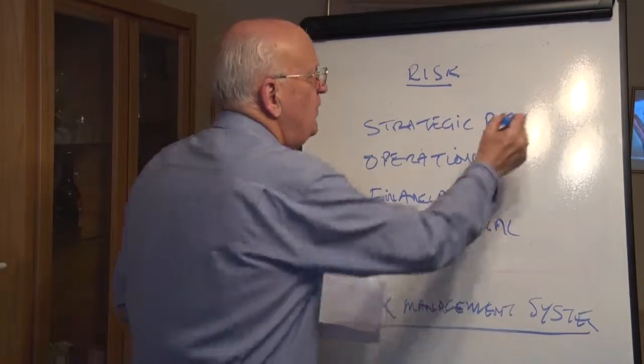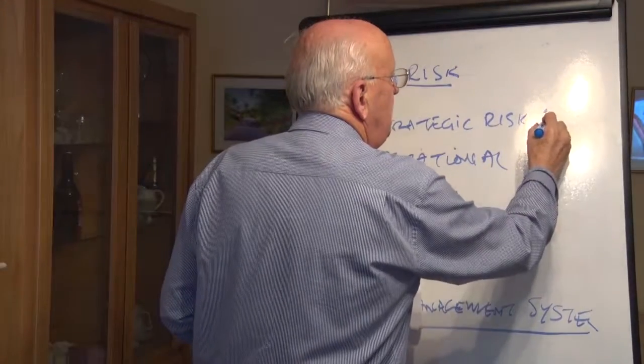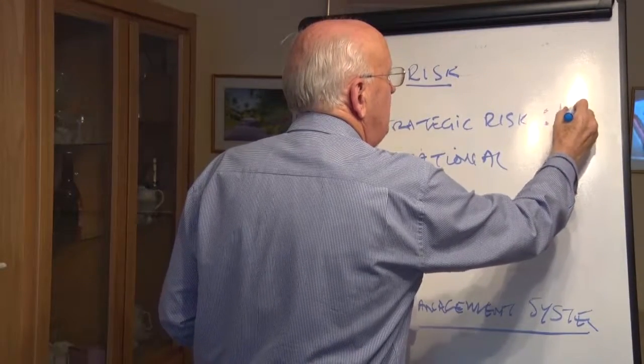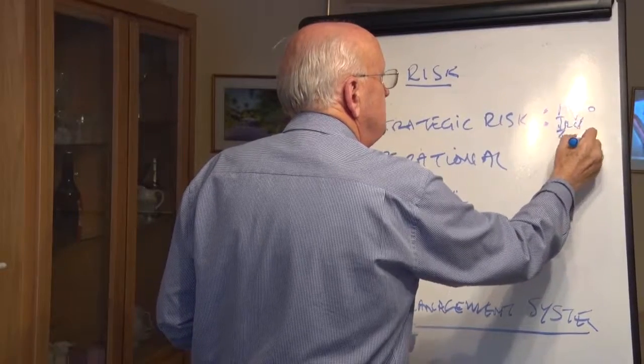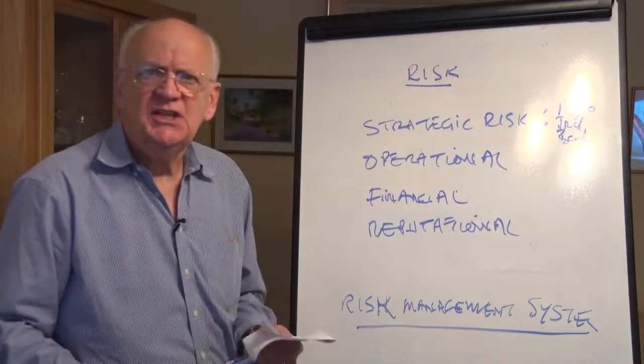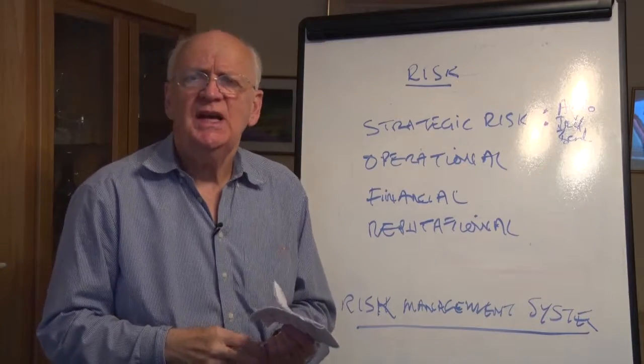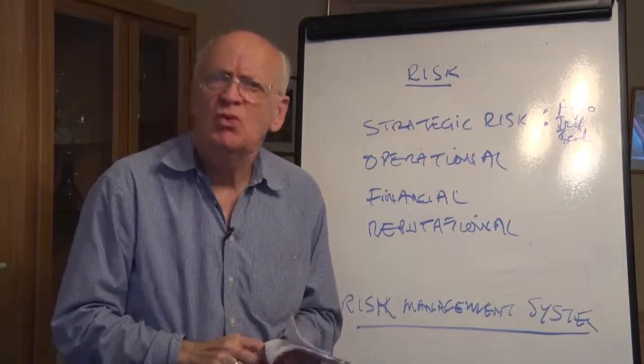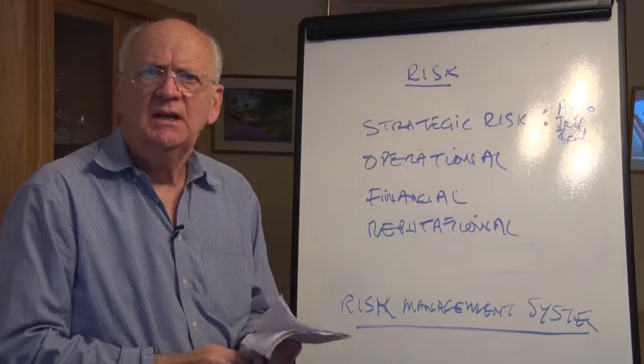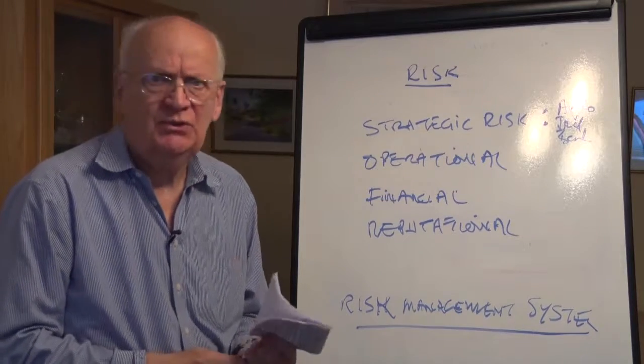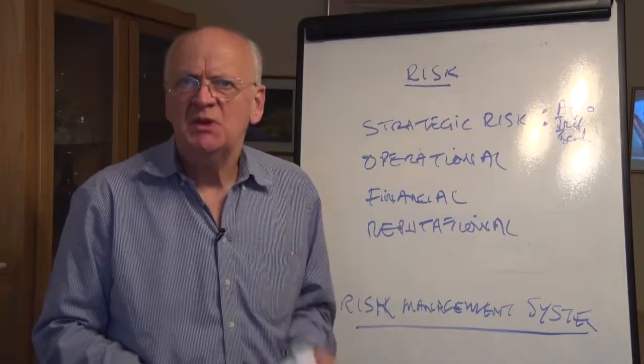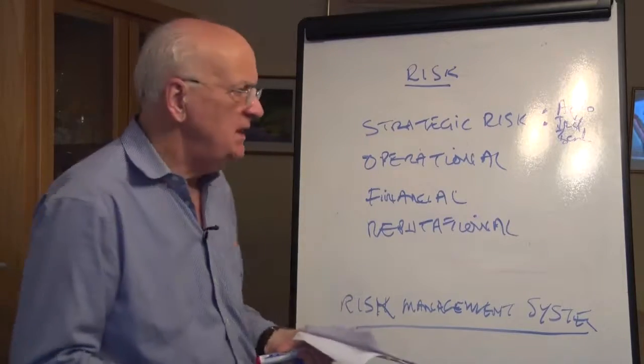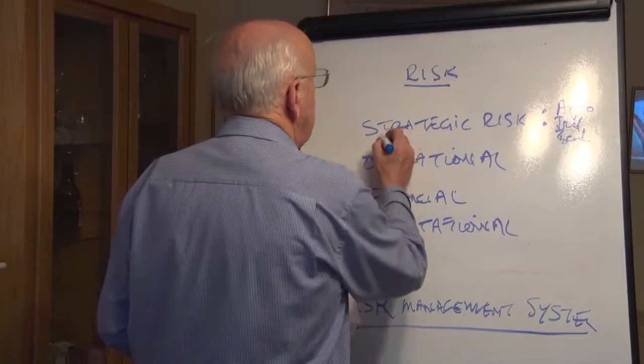For example, in Ireland, the collapse of Anglo-Irish Bank was a strategic risk. It cost the country 80 billion euro and more to redeem that. It nearly bankrupt the whole nation. And that's because there wasn't good risk assessment being done. A lot of honesty is necessary. So that's a strategic risk.